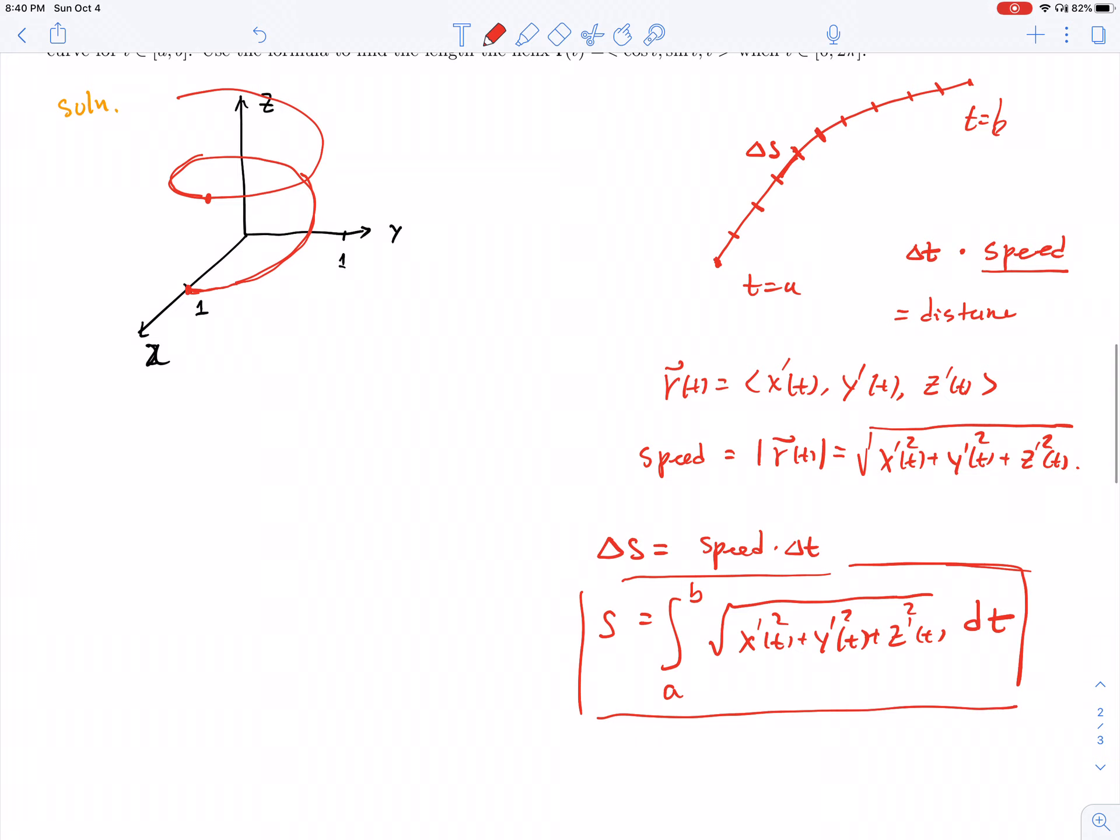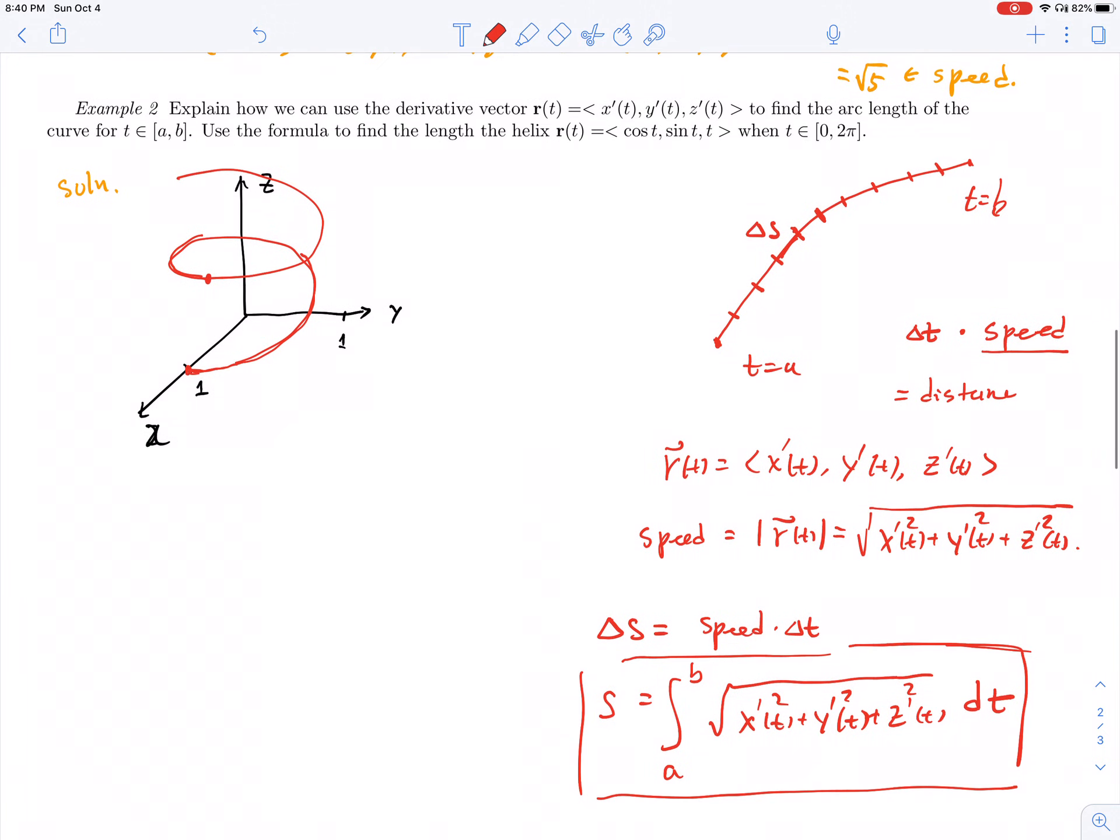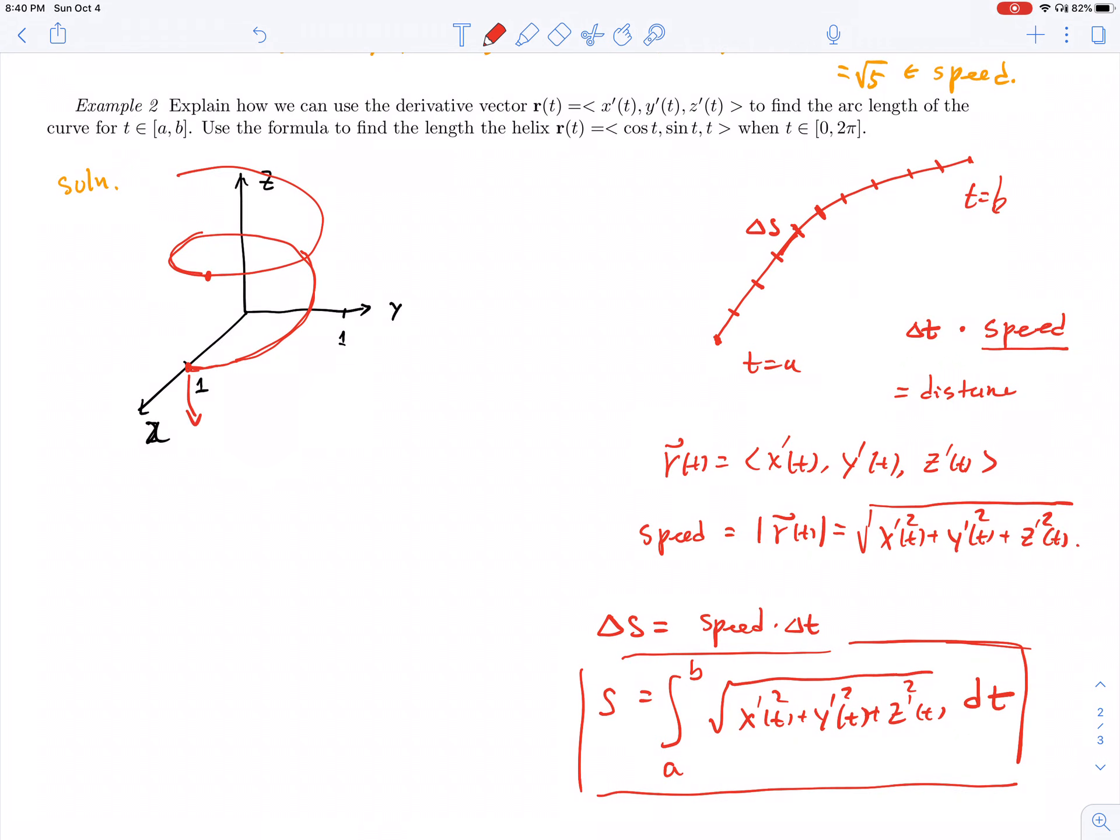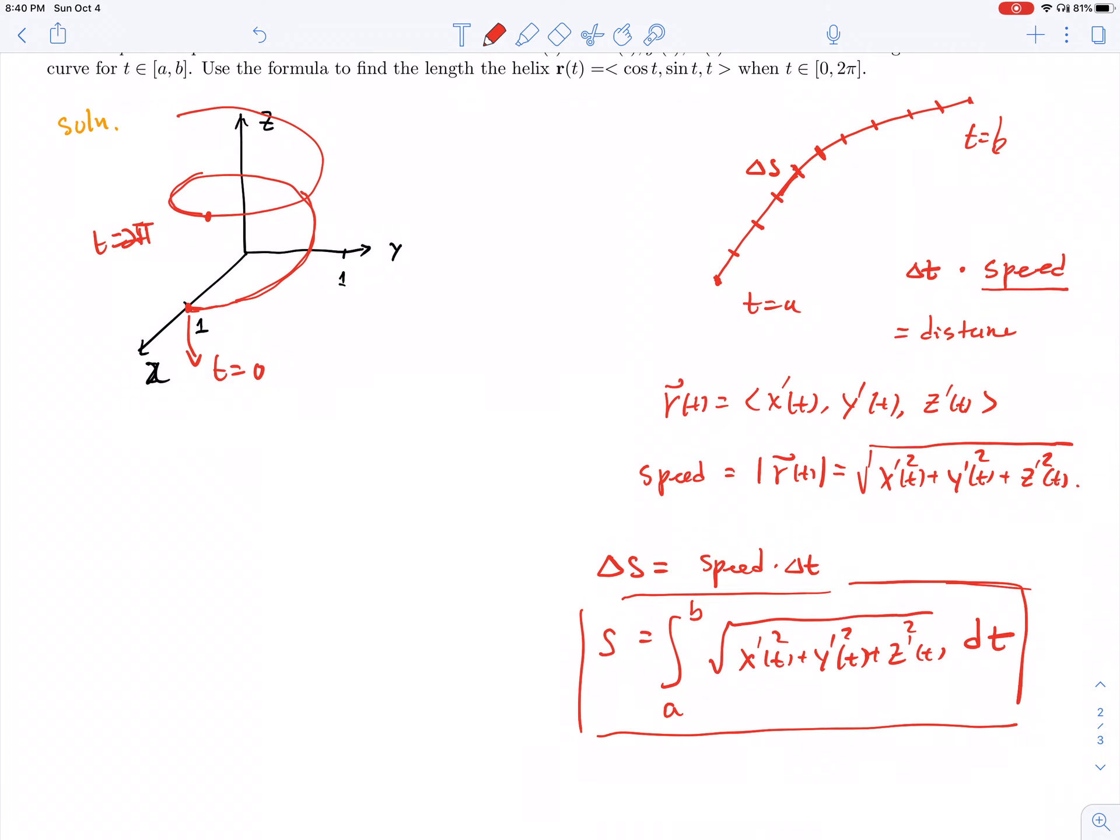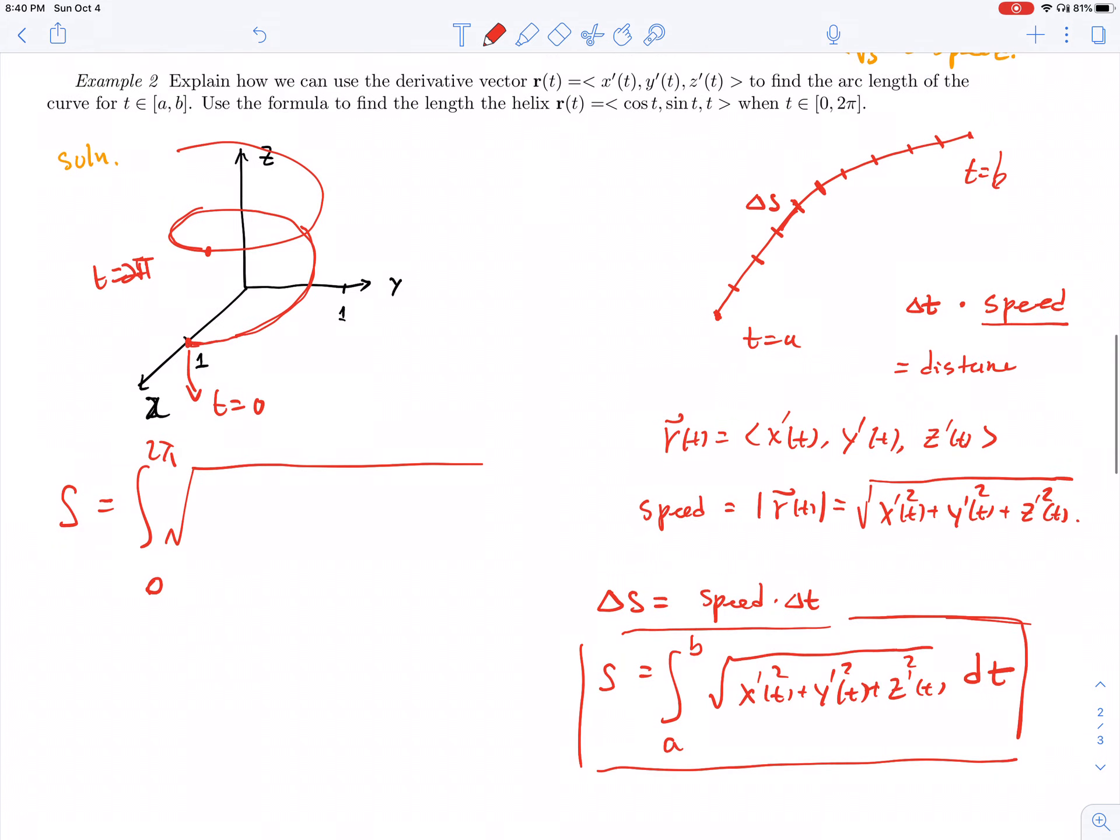Once we have this formula, the rest is pretty straightforward. We're going to calculate the arc length when T is from 0 to 2π, a complete cycle. The total distance S is from 0 to 2π. We already calculated the derivatives. The derivative of cosine is negative sine t squared, plus derivative of sine t is cosine t squared, plus derivative of t is 1 squared, then dt.